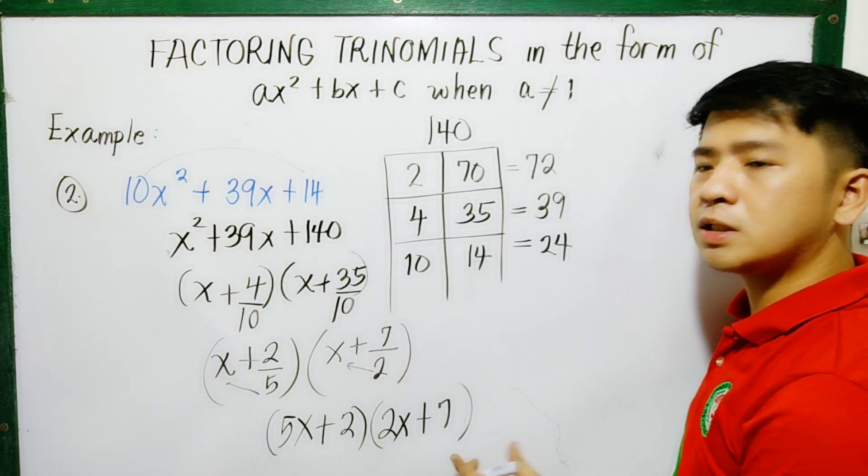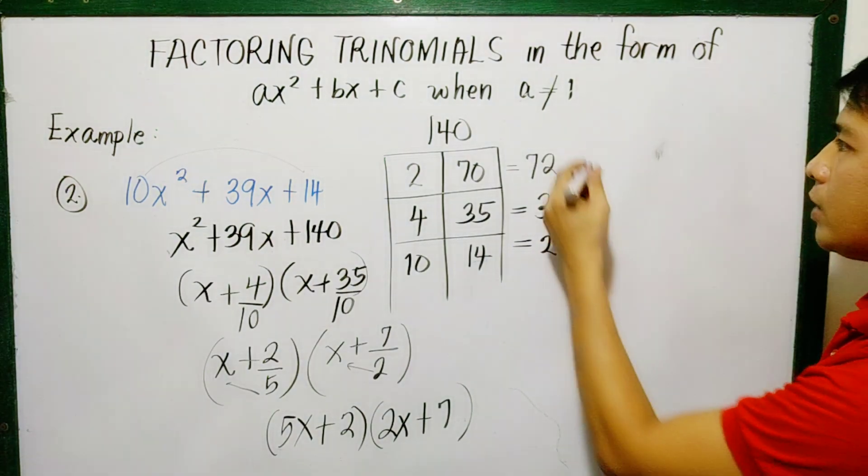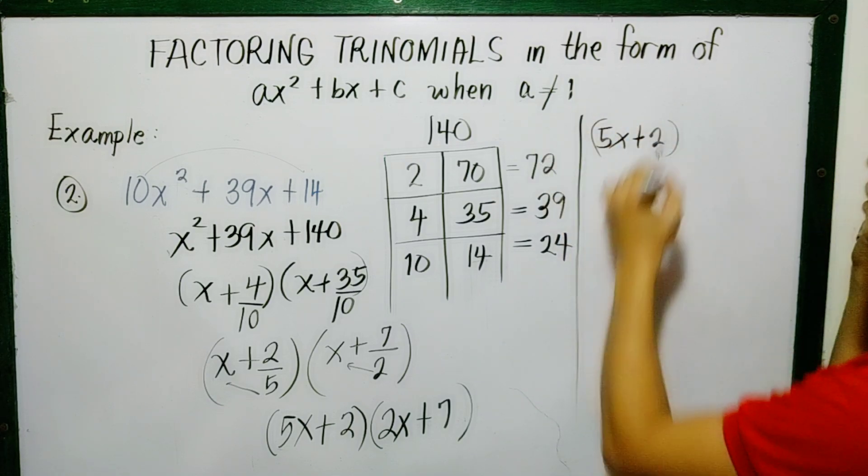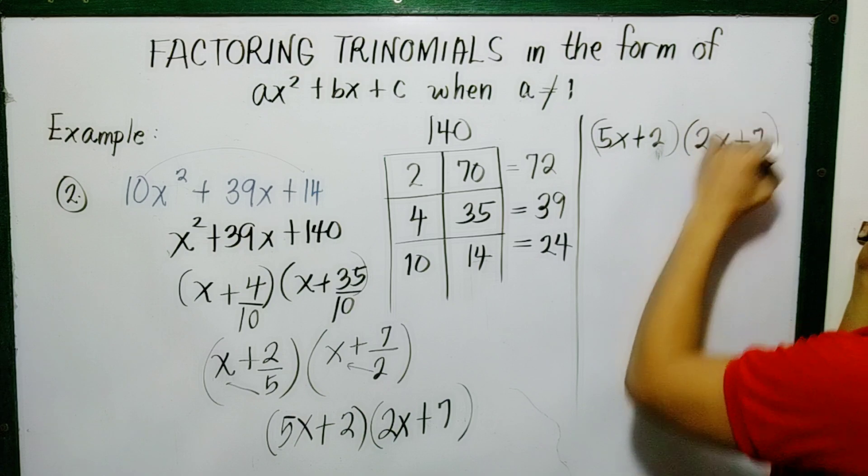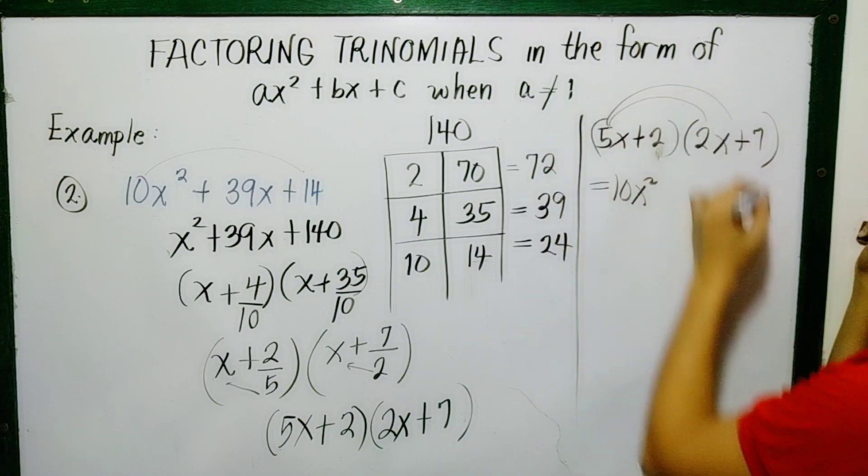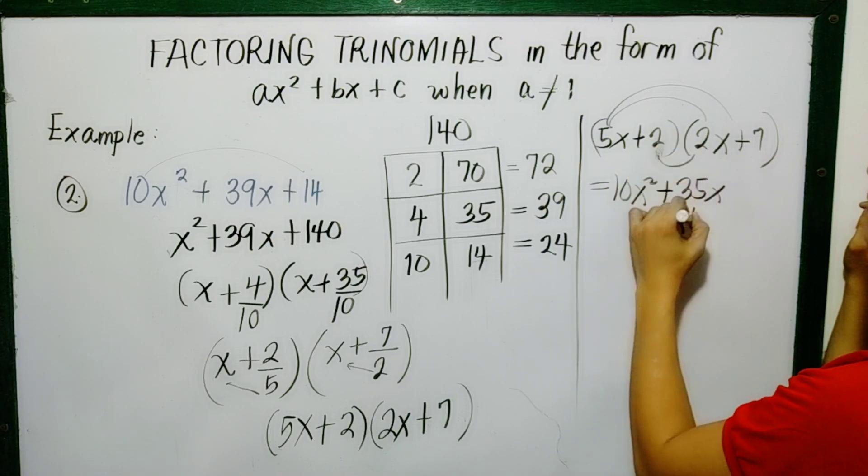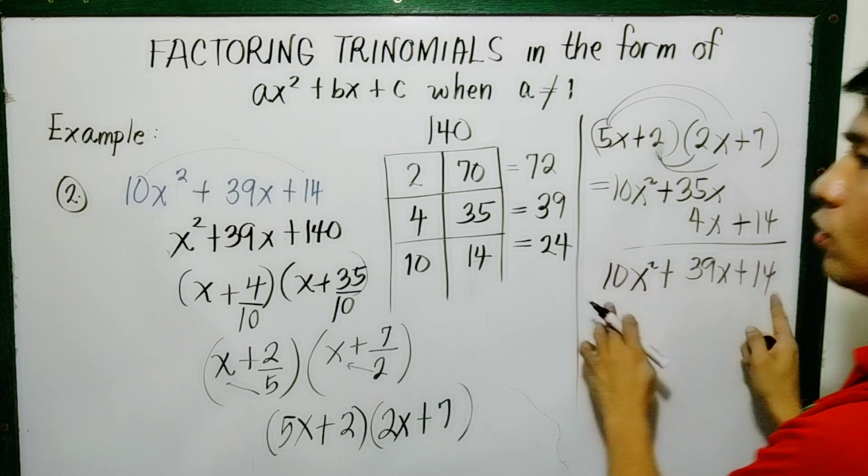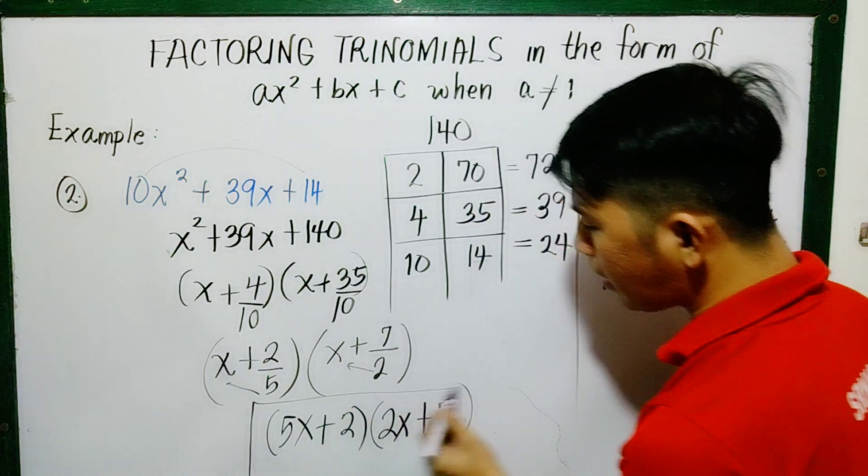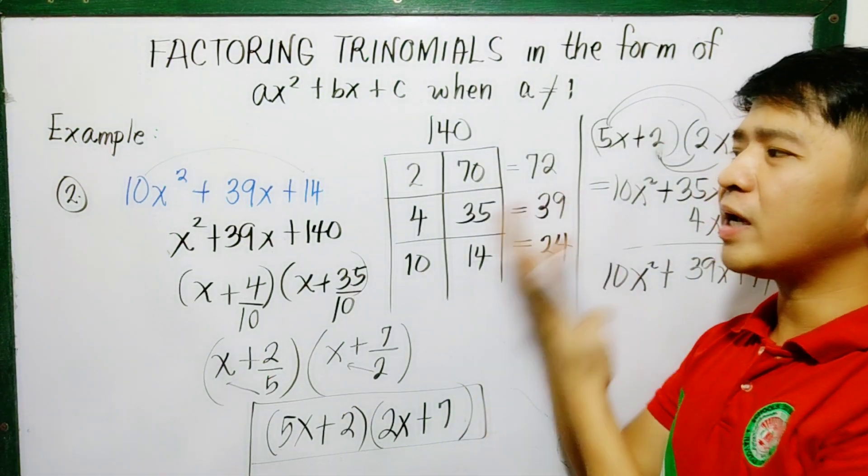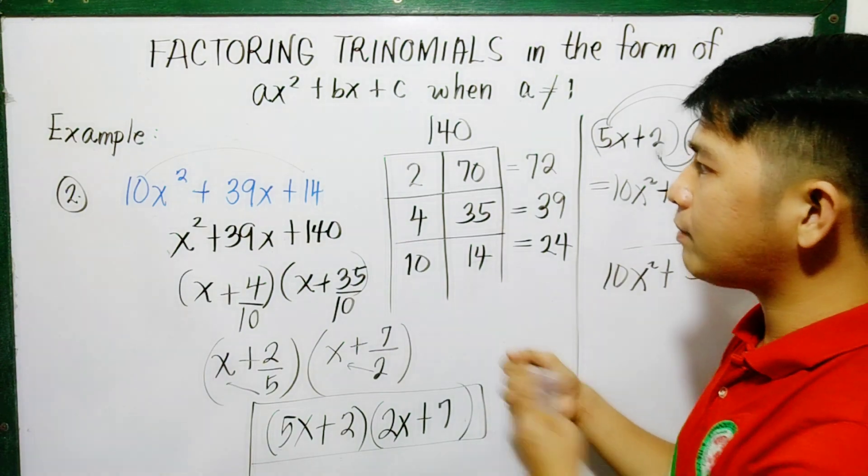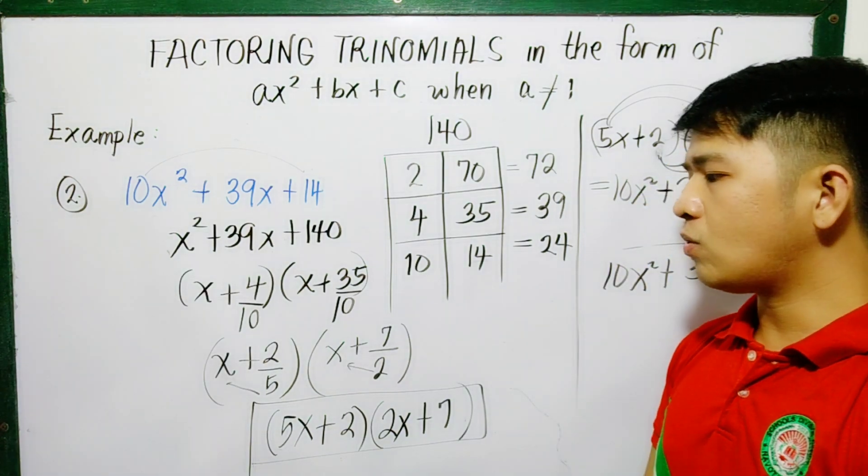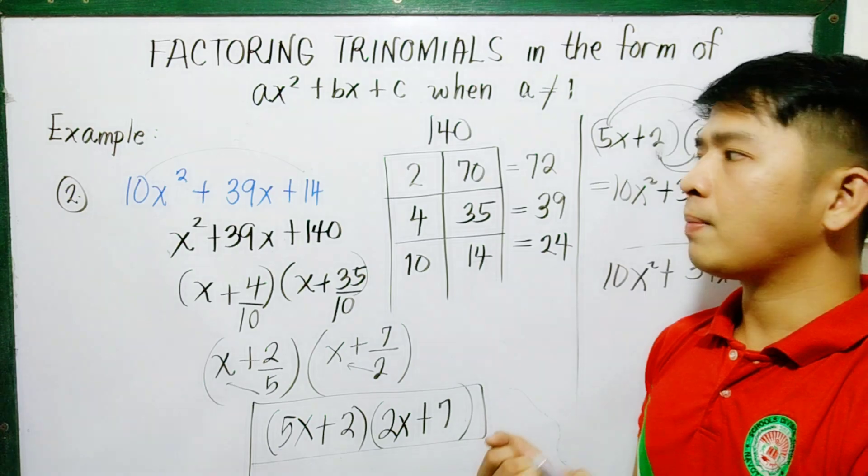If you're not yet sure with your answer, we can use the FOIL method. I'll write it here. We have 5x plus 2 multiplied by 2x plus 7. So FOIL method, that is 10x squared plus 35x plus 4x plus 14, which equals 10x squared plus 39x plus 14. Since this is the same as that, the factors now are 5x plus 2 times 2x plus 7. So there are some cases where others don't use this and don't do FOIL method anymore because they are confident enough with their answers. So if you practice well, you can do that.